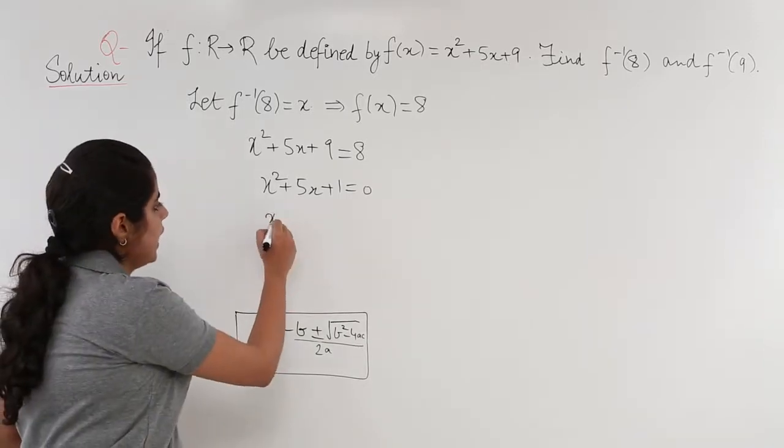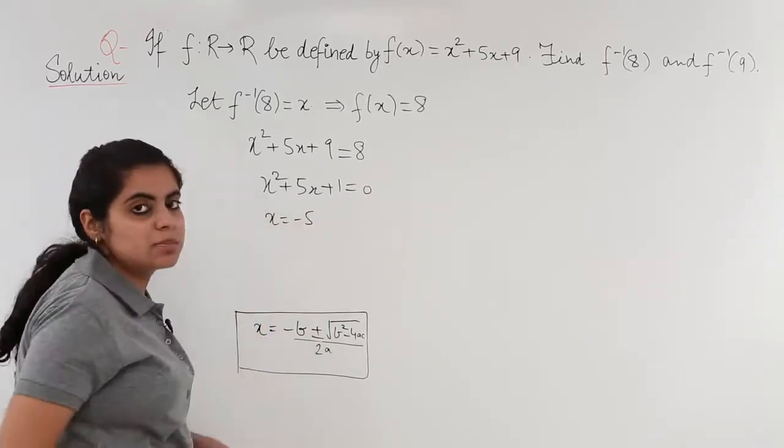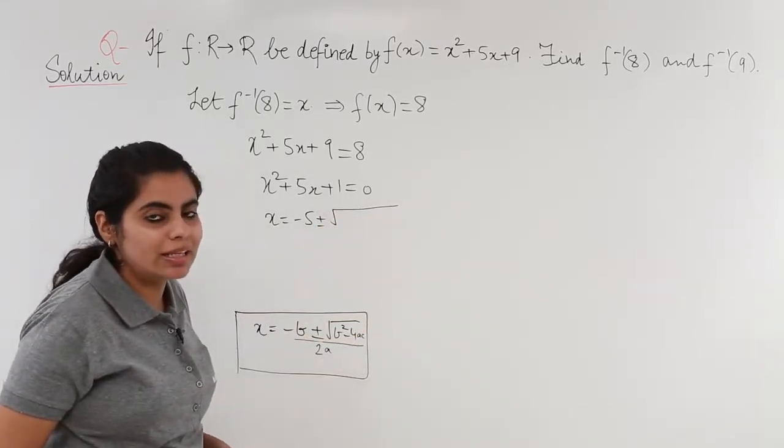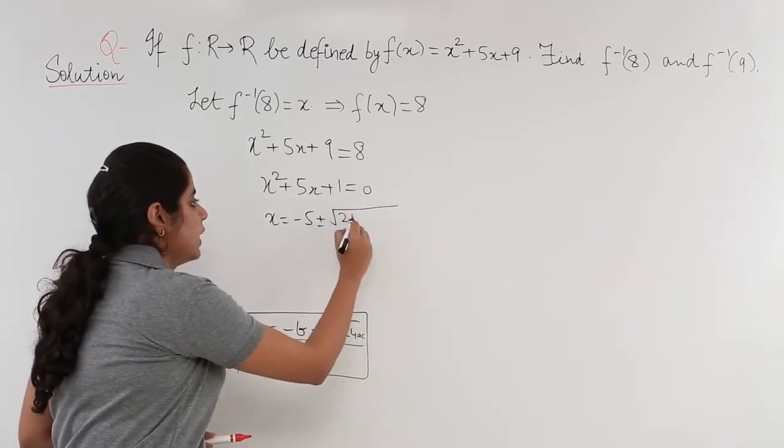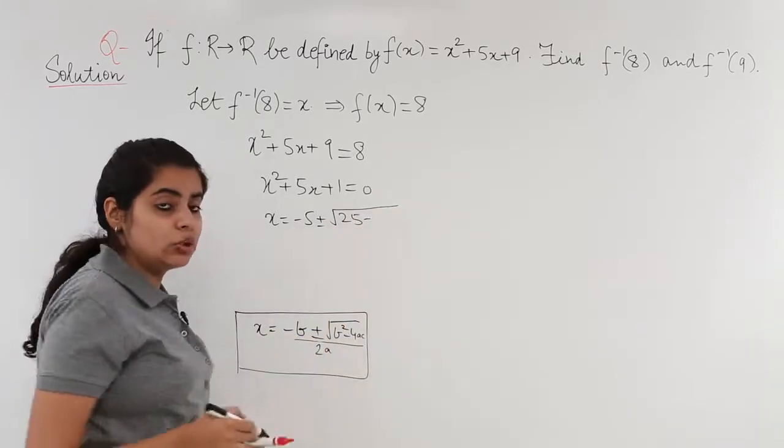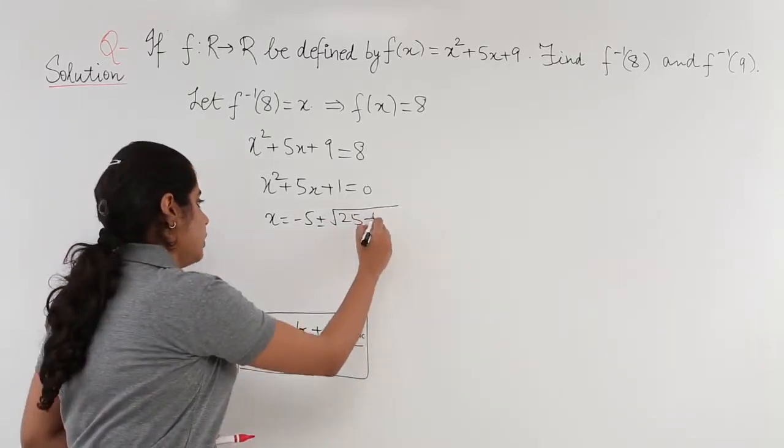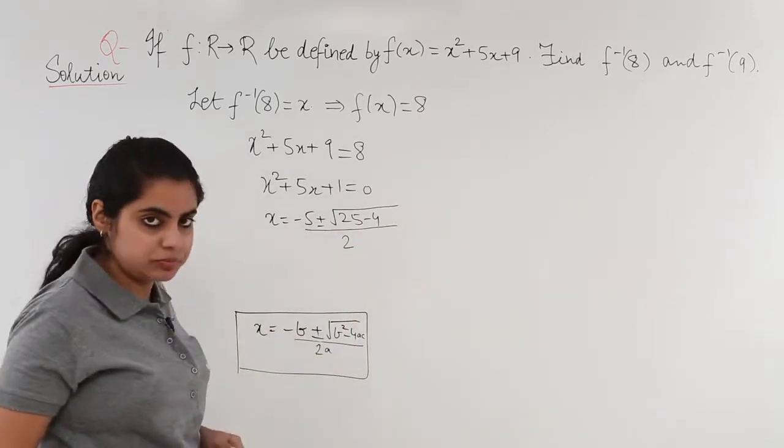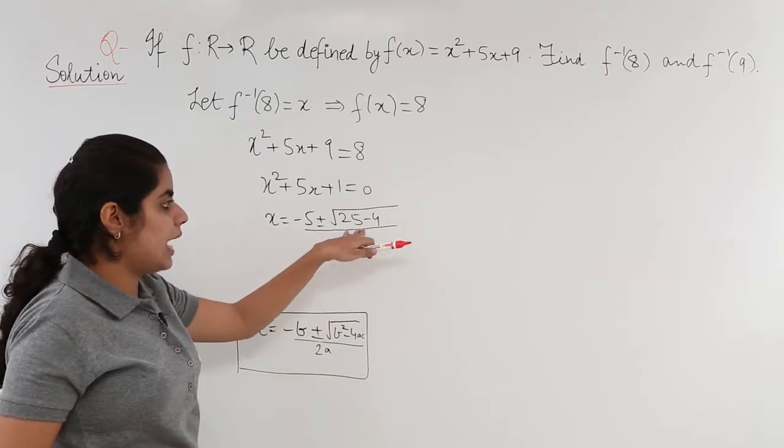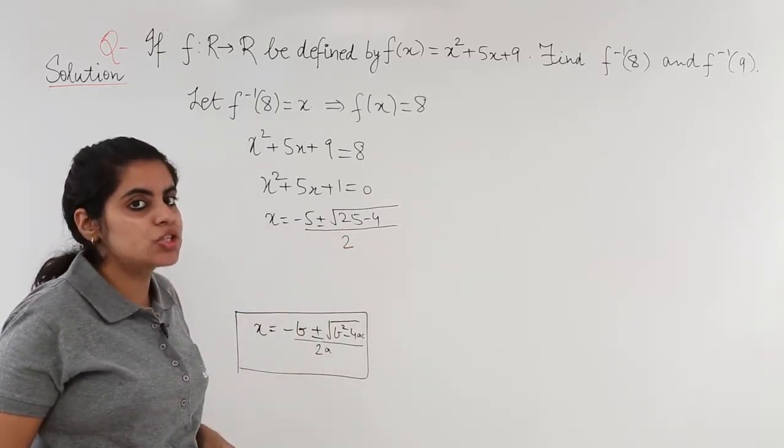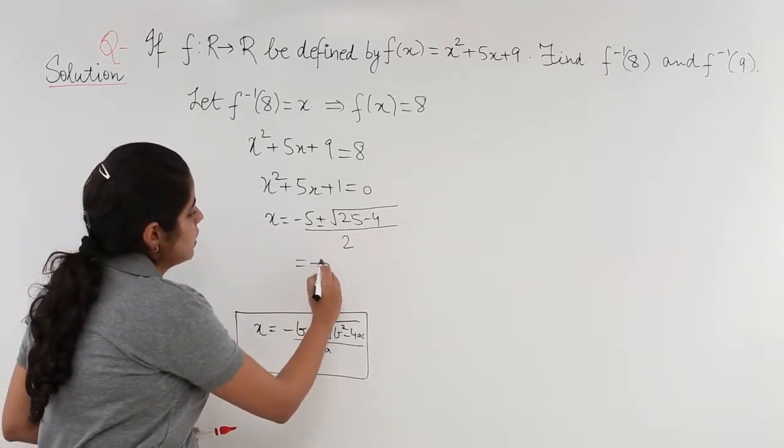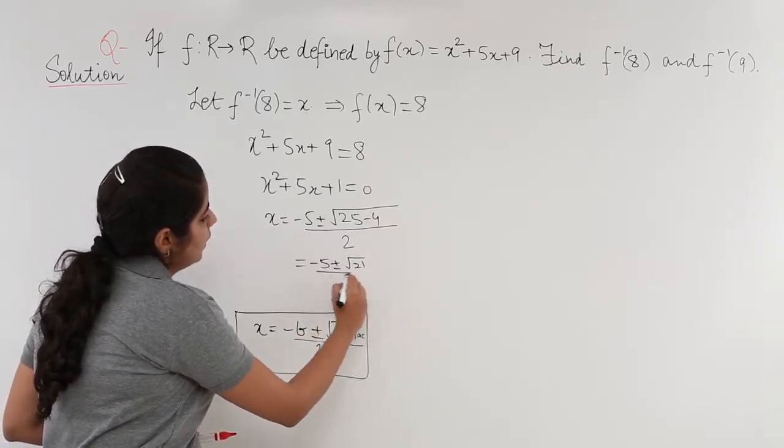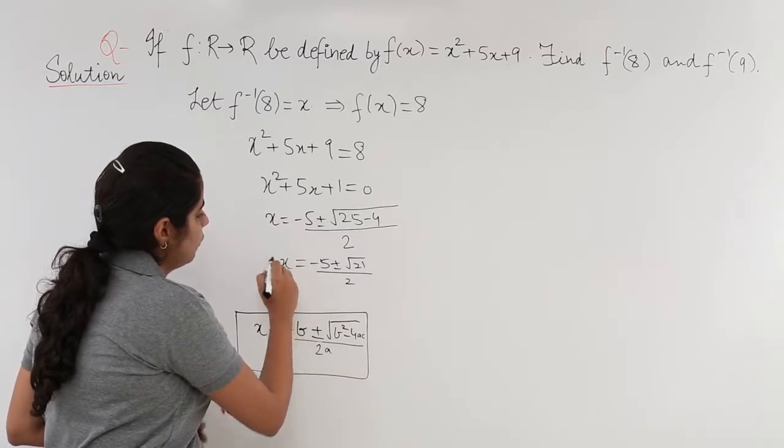Let's solve it. x equals minus b that means -5 ± √(b²) that means √25 - 4·1·1 that means 4, upon 2a that means 2·1. Now the root has 21 inside which is not a perfect square. The root remains as it is. So it is (-5 ± √21)/2 that is the value of x.